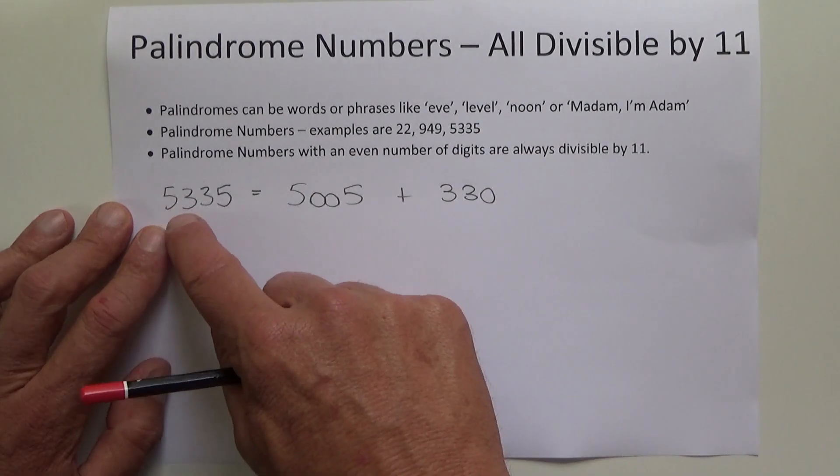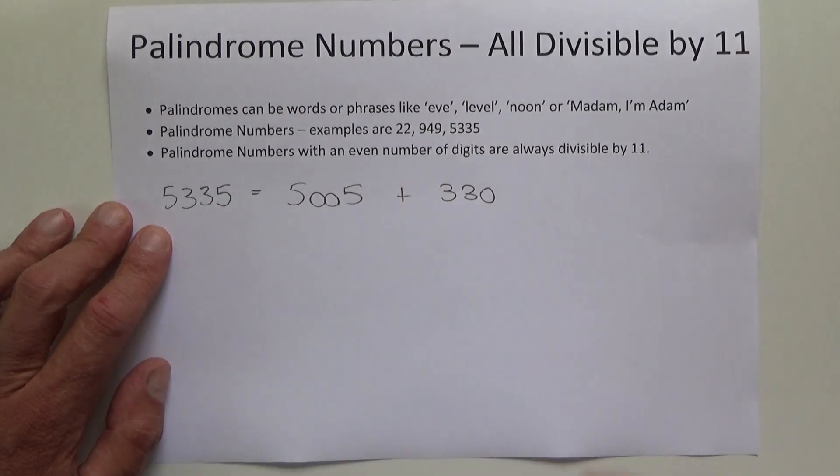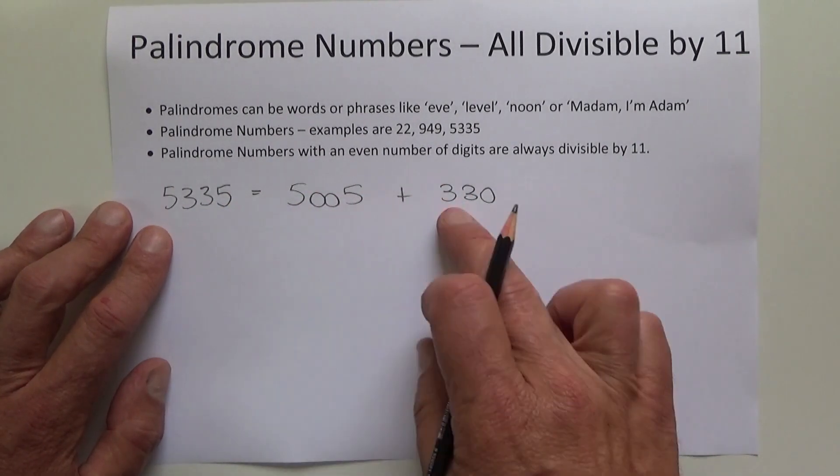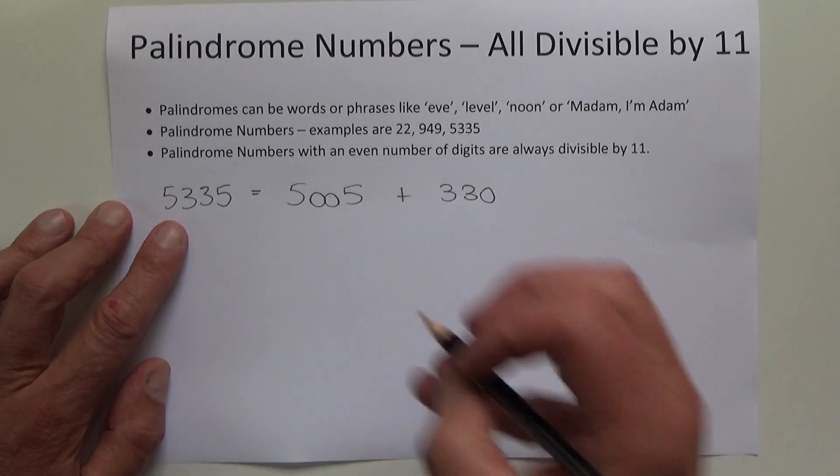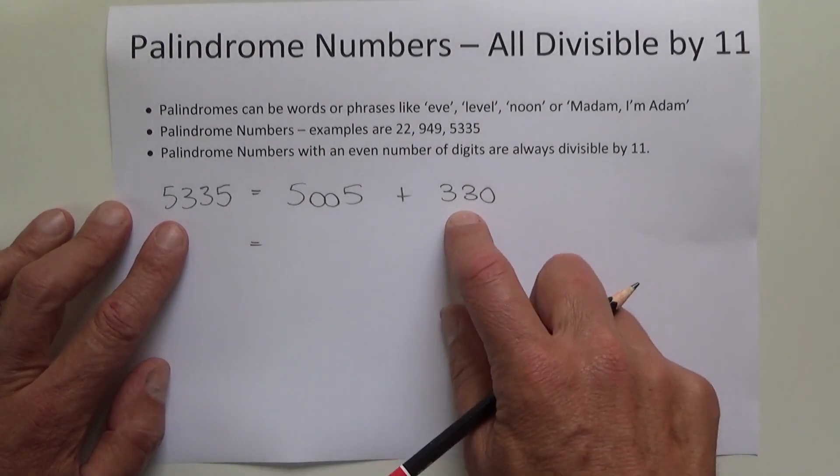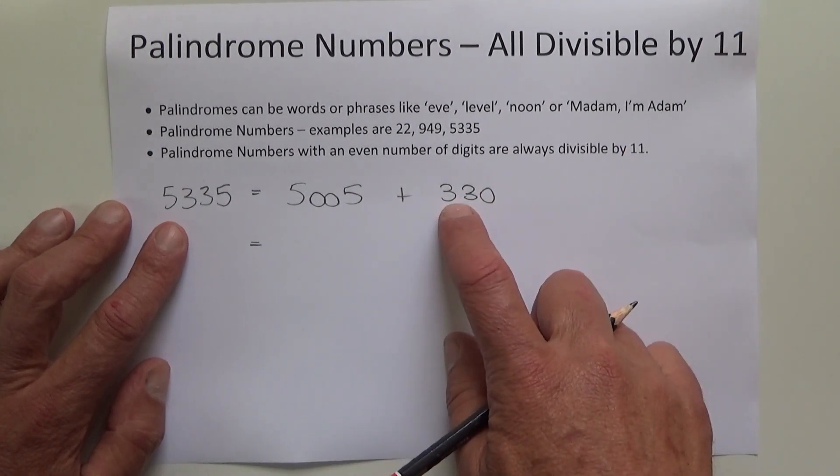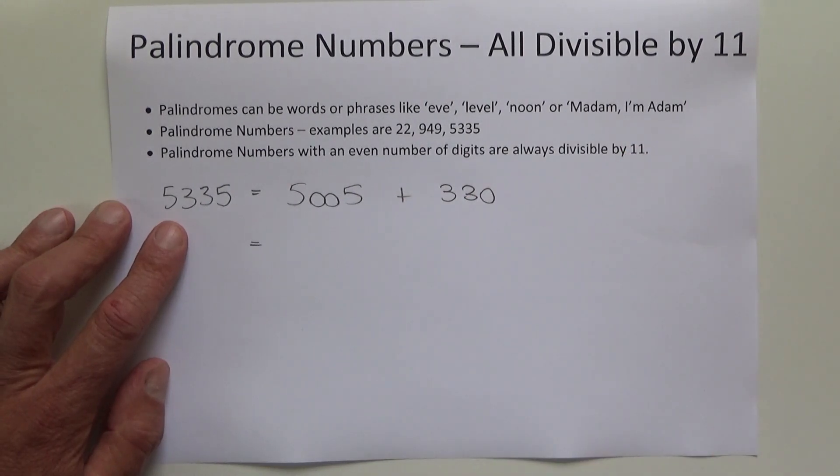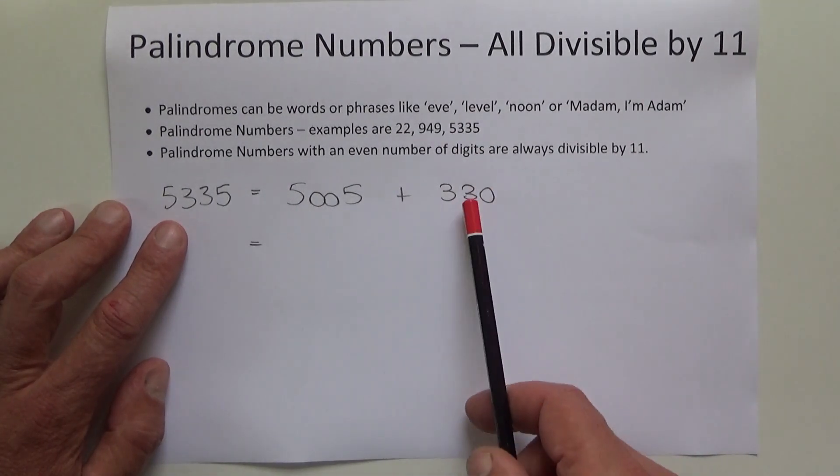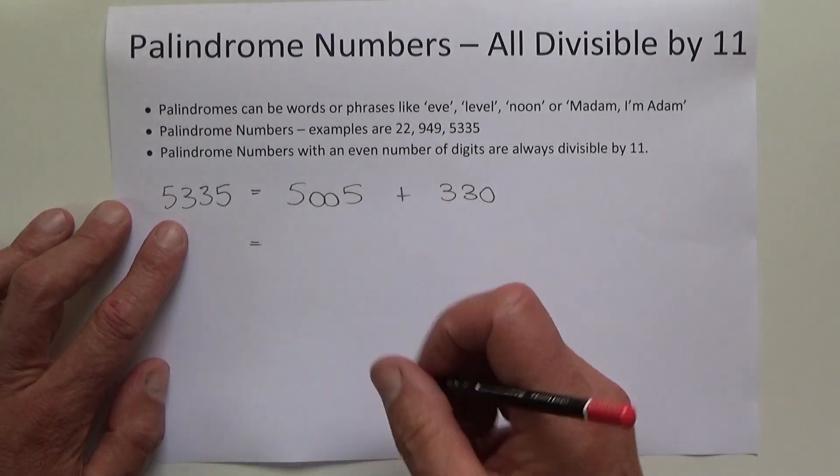5005 plus 330 equals 5335. If you look at 330, you know instantly that 30 times 11 is 330, or 330 divided by 11 equals 30. So you know that 330 is divisible evenly by 11 just by looking at it.